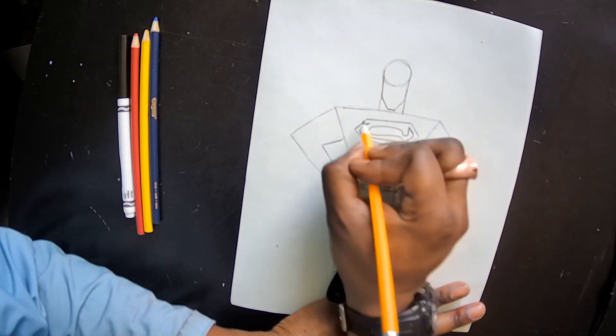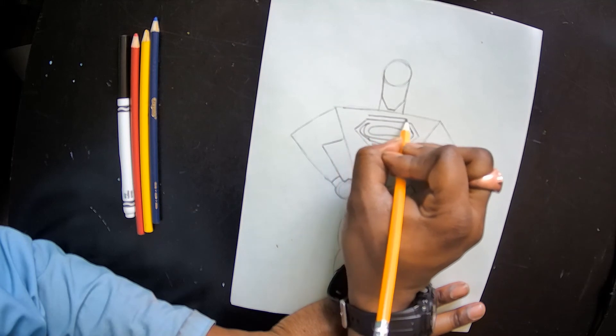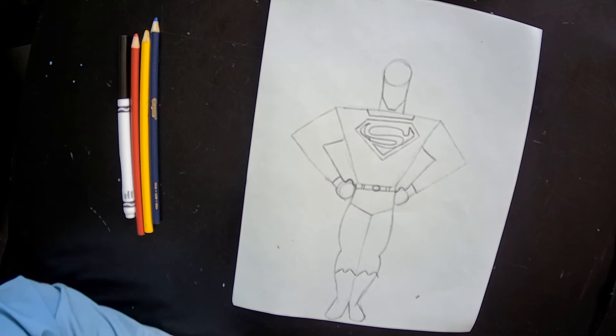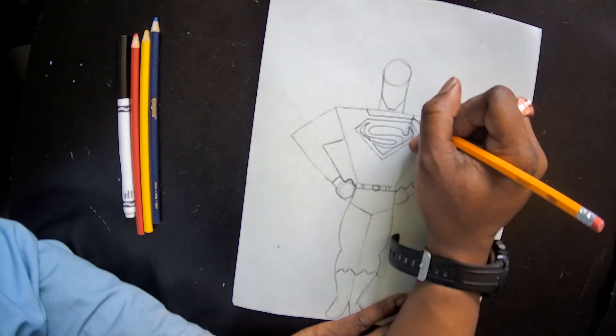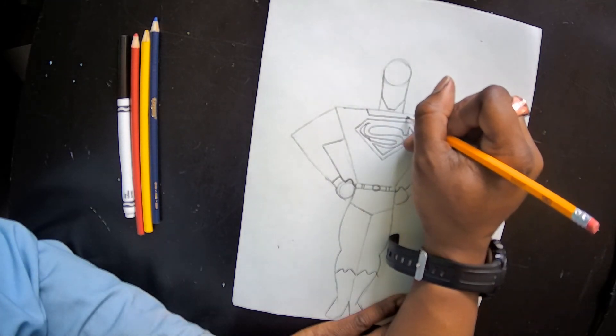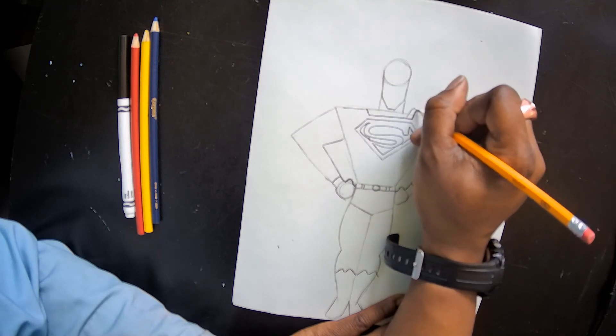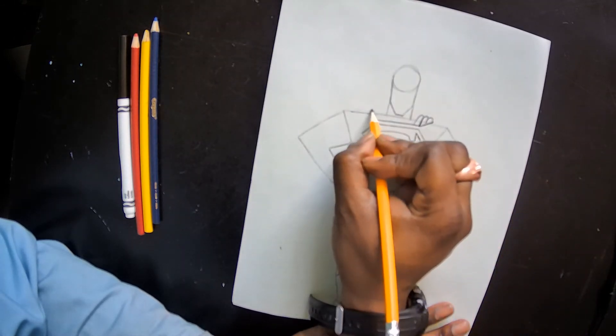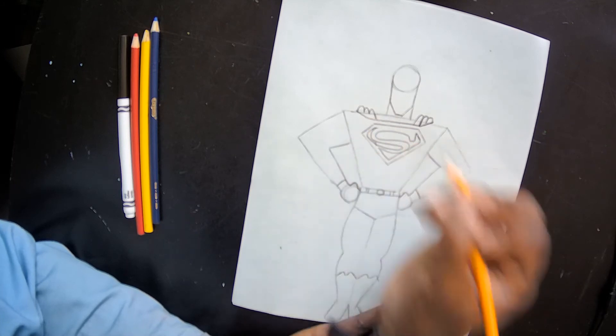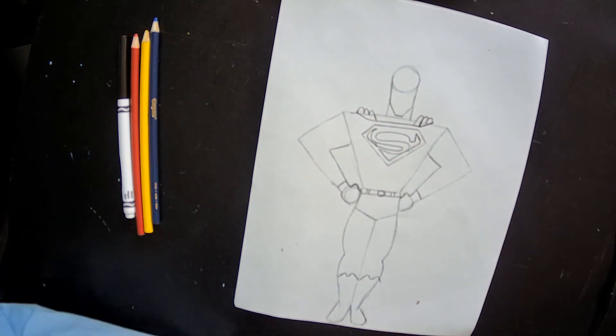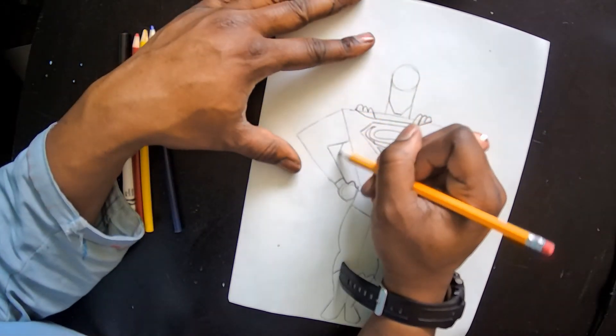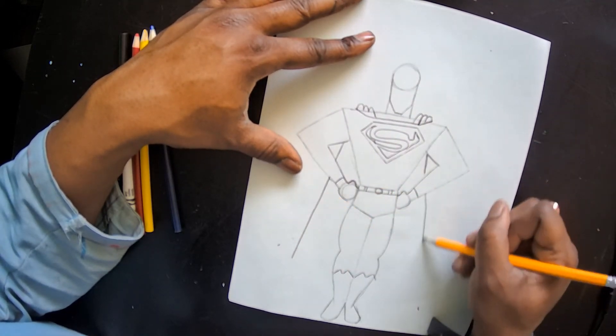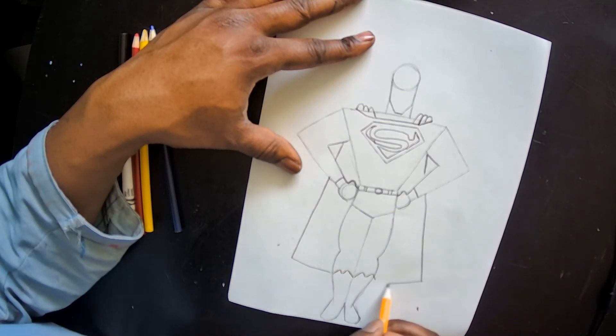For my collar here, I'm going to make a little thin line above my S and go straight up on both sides. On the side of the face here, I'm going to make one, two, three loops that kind of go over to the side. That's going to be the top of my cape, and that means my cape is going to come down behind me on both of those sides.